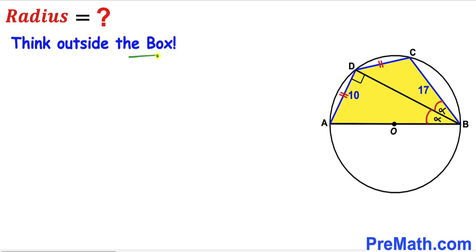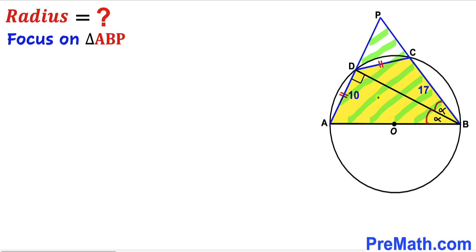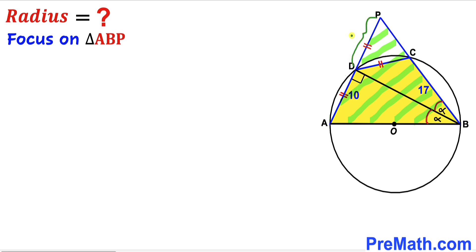Thinking outside the box, we draw auxiliary lines by extending chords AD and BC until they intersect at point P. Focusing on triangle ABP, since BD is both perpendicular and an angle bisector, chord AD equals segment PD. Because AD is 10 units, PD is also 10 units, and triangle ABP is an isosceles triangle.